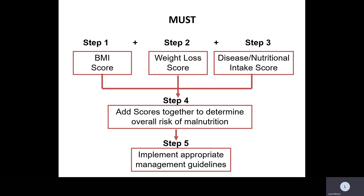In MUST you have step one (BMI score) plus step two (weight loss score) plus step three — whether there is a disease that may impact on nutritional intake or increase losses. You combine all the scores together to determine the overall risk, and then implement appropriate management guidelines.